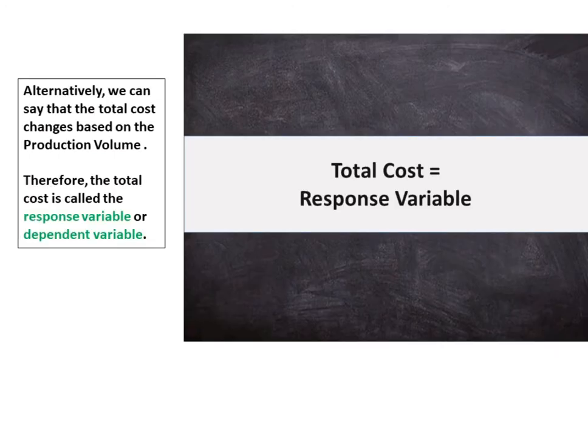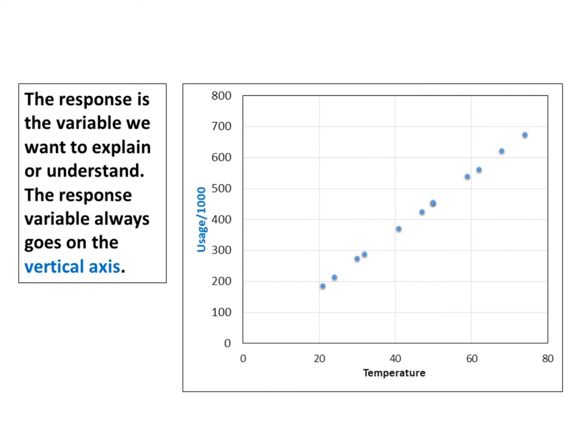Alternatively, we can say that the total cost change is based on the production volume. Therefore, total cost is called the response variable or dependent variable. The response is the variable we want to explain or understand. The response variable always goes on the vertical axis.